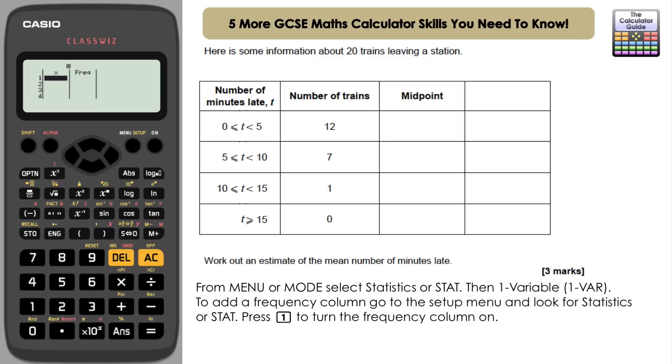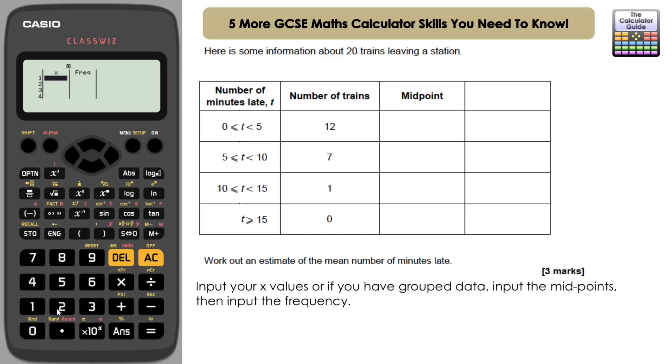Now because we have groups or classes here, we're going to input the midpoints of these groups. So 0 to 5, midpoint is 2.5. 5 to 10, midpoint is 7.5. 10 to 15, midpoint is 12.5. The fourth group is a little bit confusing on this one. We don't have a midpoint, but then we don't have any trains, so actually we don't need to include that as part of our table, so we'll just leave that there. Let's navigate back up to the top of the frequency table and fill in our frequencies: 12, 7, and 1.